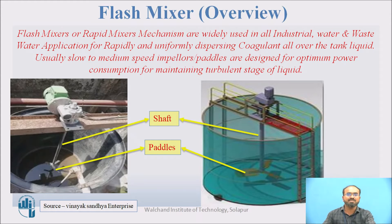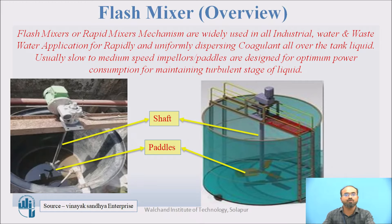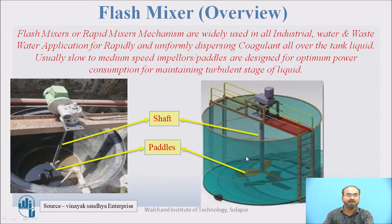Flash mixers or rapid mixer mechanisms are widely used in the industrial sector, but not typically in a conventional water treatment plant — though they are also used in wastewater applications. The purpose is to rapidly mix whatever coagulant is being added into the water so that homogeneous mixing occurs. After passing through the flash mixer, the impellers or paddles are rotated at a faster rate and then slowed down so that proper coagulation also takes place.